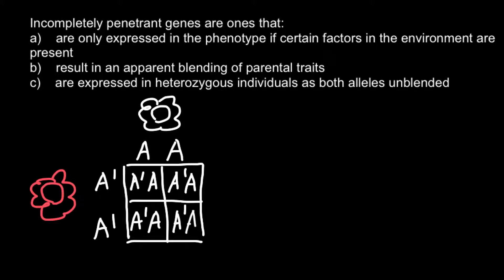I'm using both letters as capital because in this example we don't have a dominant and recessive allele — both alleles, capital A-prime and capital A, are co-dominant. The result of such a cross would be plants with flowers that are not a mixture of both colors, but instead flowers with patches of red color and white color.